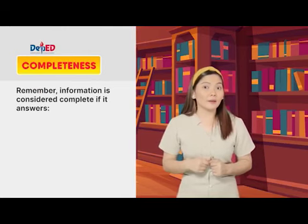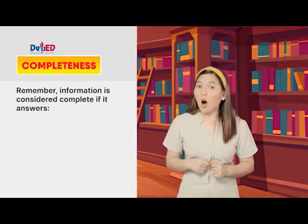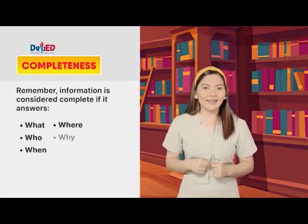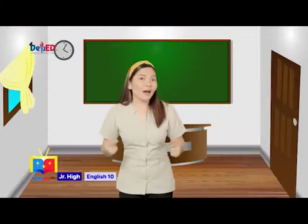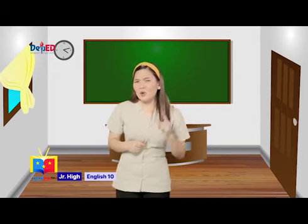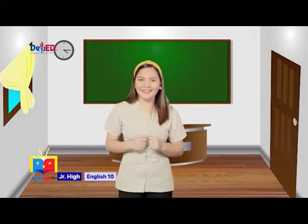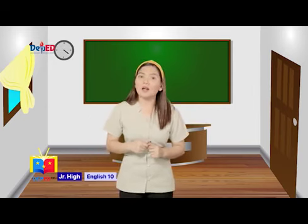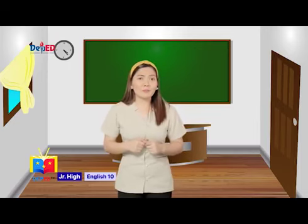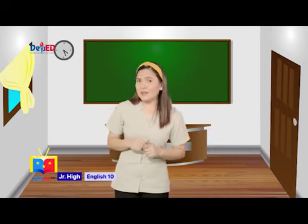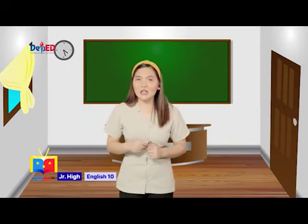Information is considered complete if it answers what, who, when, where, why, and how. Imagine winning a concert ticket of your favorite K-pop group. You were extremely excited about it, so you immediately showed it to your friends. But when they asked you about the details of the concert, you couldn't give them any because the information in the ticket is incomplete. How would you feel? Disappointed, definitely. That is why completeness of information is a must.